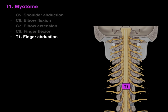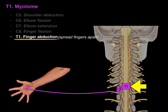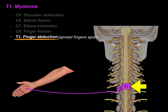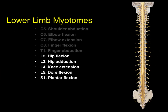Finally for the upper limb, the T1 myotome is finger abduction, or spreading the fingers apart. There's the T1 myotome and T1 vertebra; the nerve courses underneath it and goes to the intrinsic muscles of the hand, which spread the fingers apart — abduct the fingers.